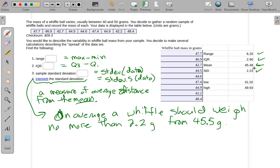We could subtract the 2.2 from the 45.5 and add it and say we expect the average wiffle ball to be between those two measurements. So what would we get? On the low end, we would get 43.3.